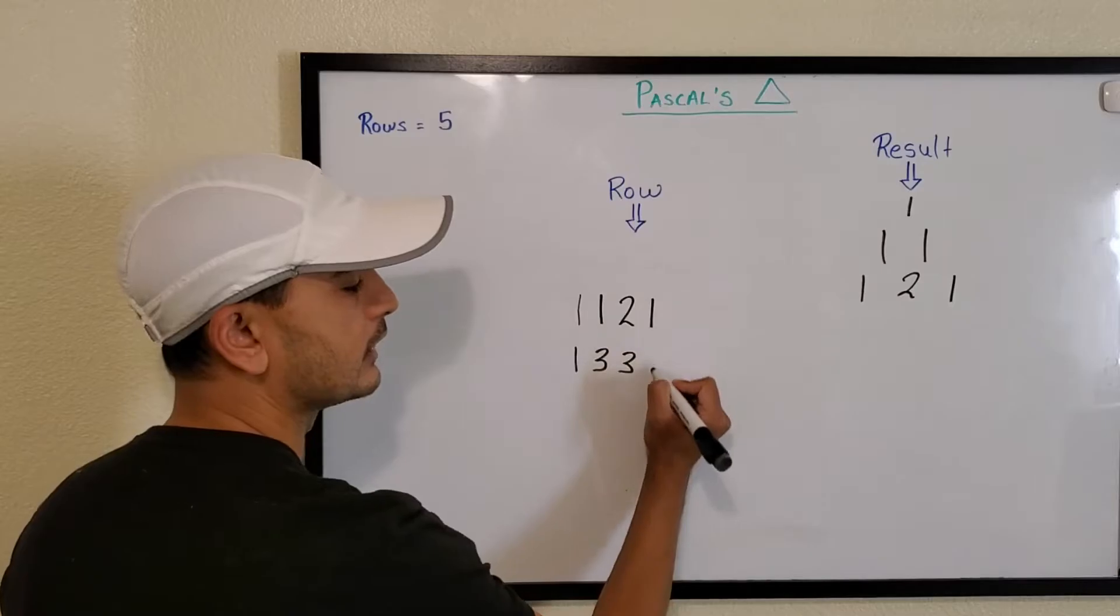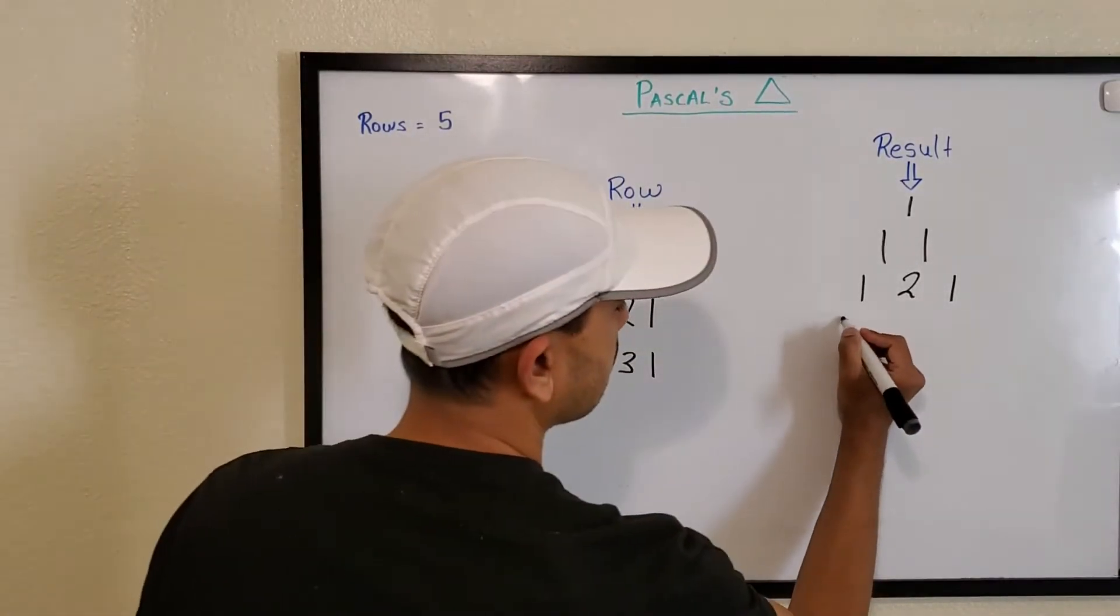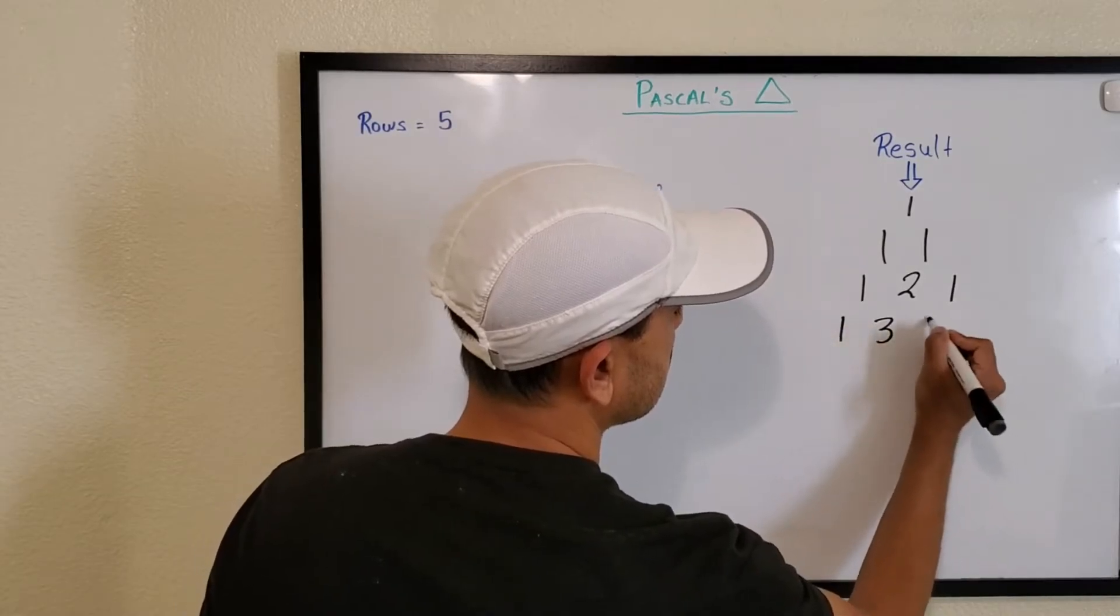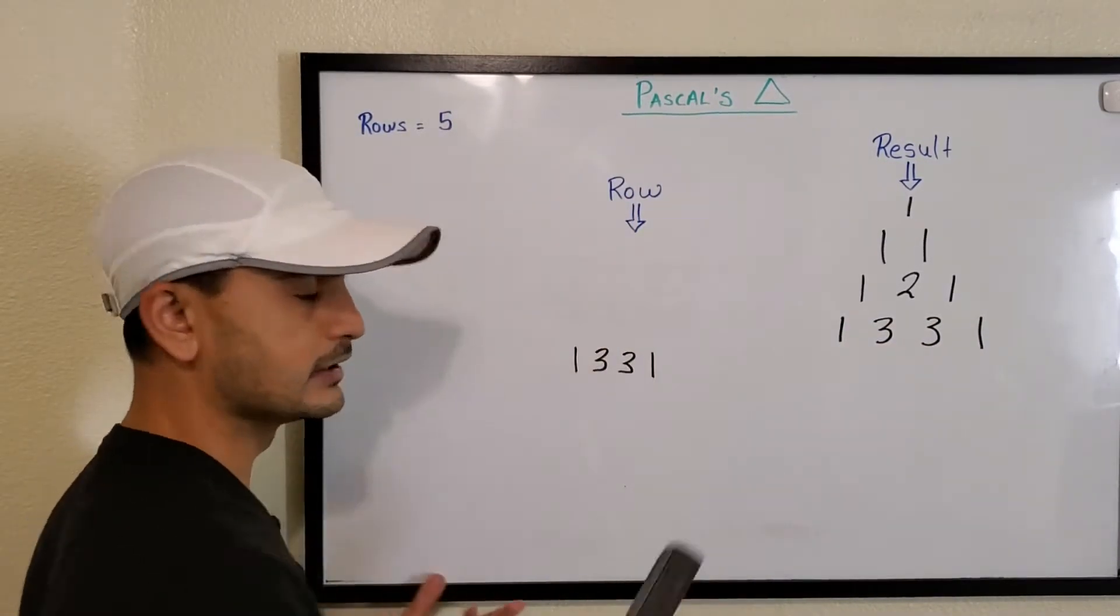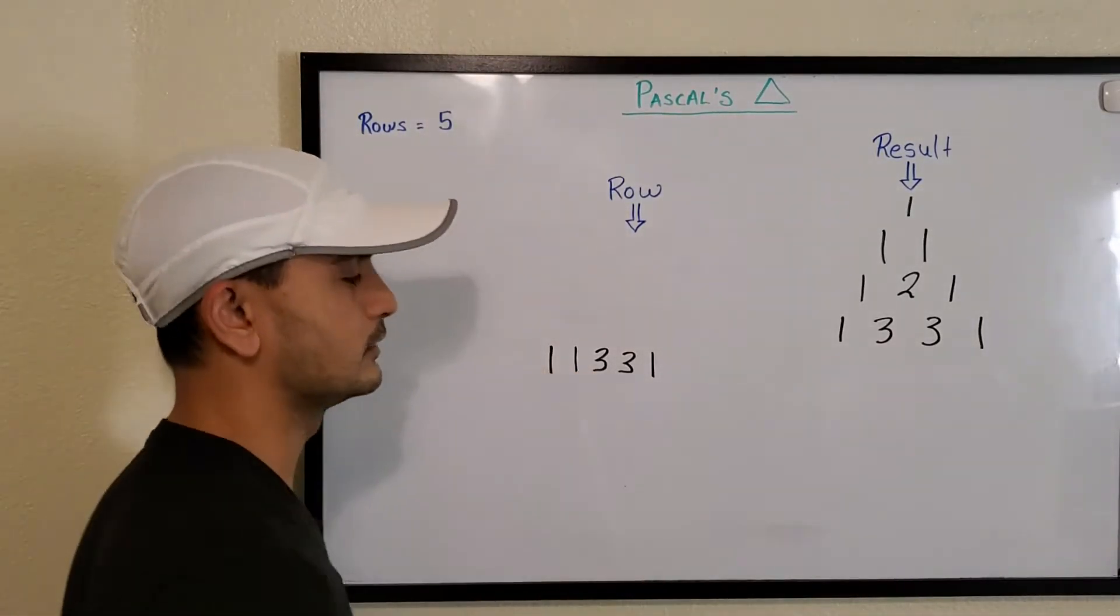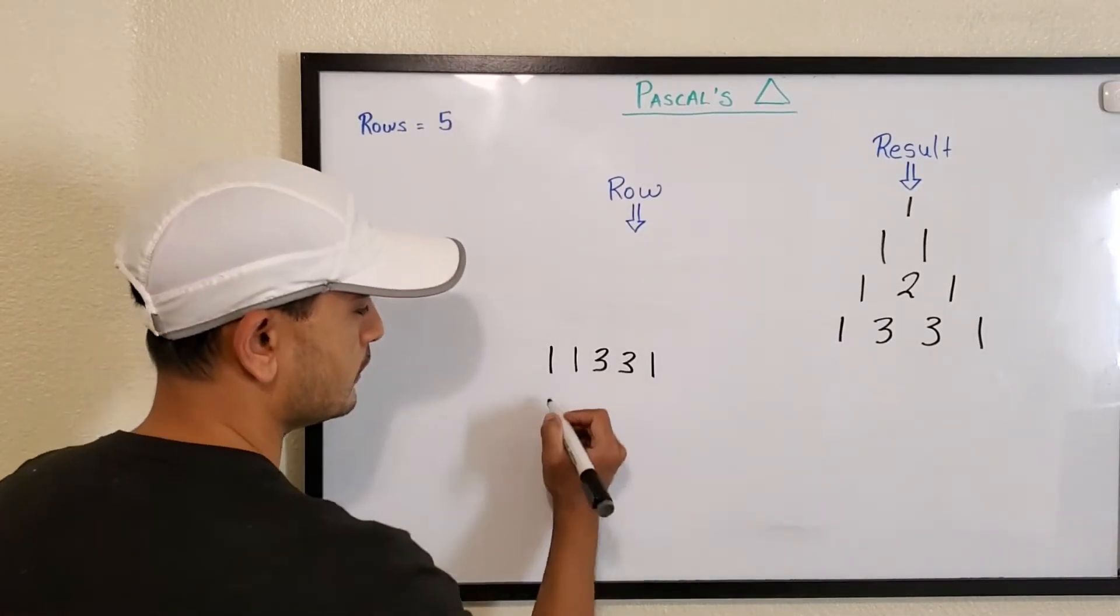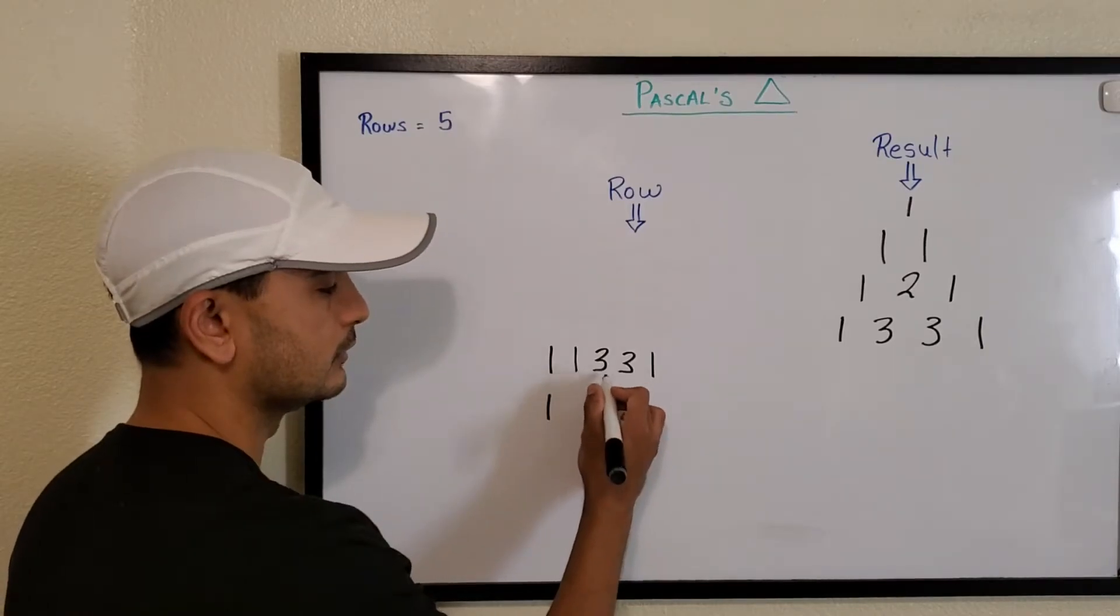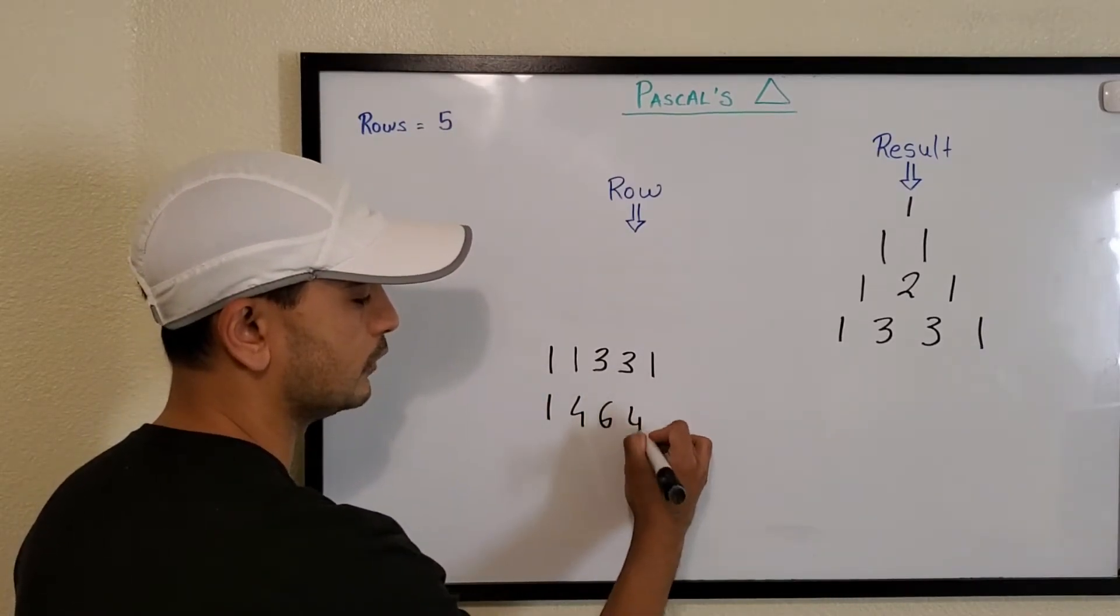That's our next row: one three three one. And you guys know what we'll do next, right? We add one at the start and then we loop over it to add the numbers. We take first number as is: three plus one is four, three plus three is six, three plus one is four, and then last number as is.